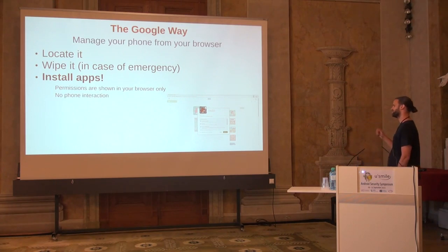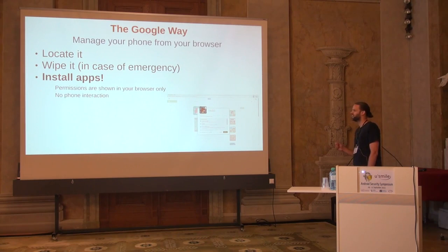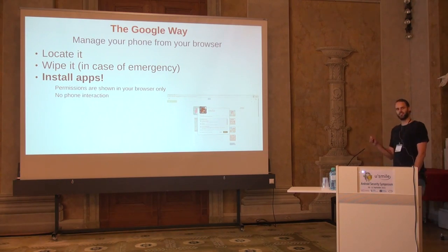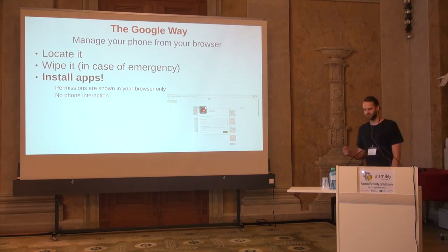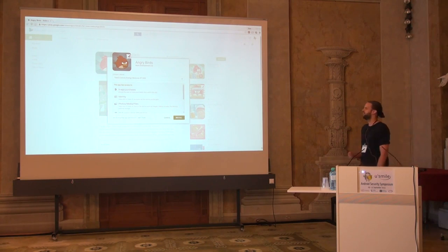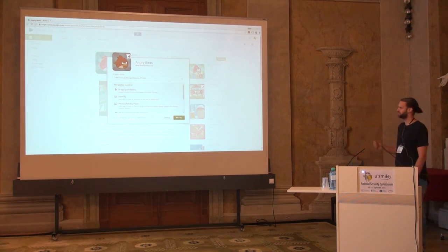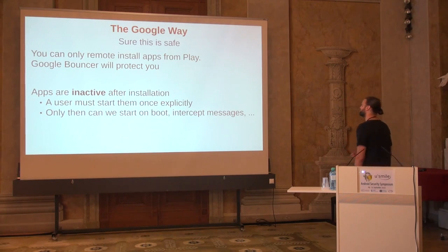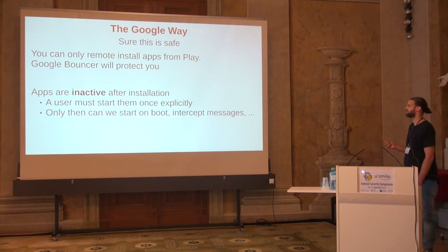Installing apps remotely is really interesting from our perspective, because the permissions you need to approve when installing the app are shown only in your browser — nothing is shown on your phone. There is no phone interaction during the installation of an app. You go to play.google.com, open an app like Angry Birds, pick your device, click install, and it gets installed on your phone. Google says it's safe because you can only install apps from Play, and Bouncer will protect you.